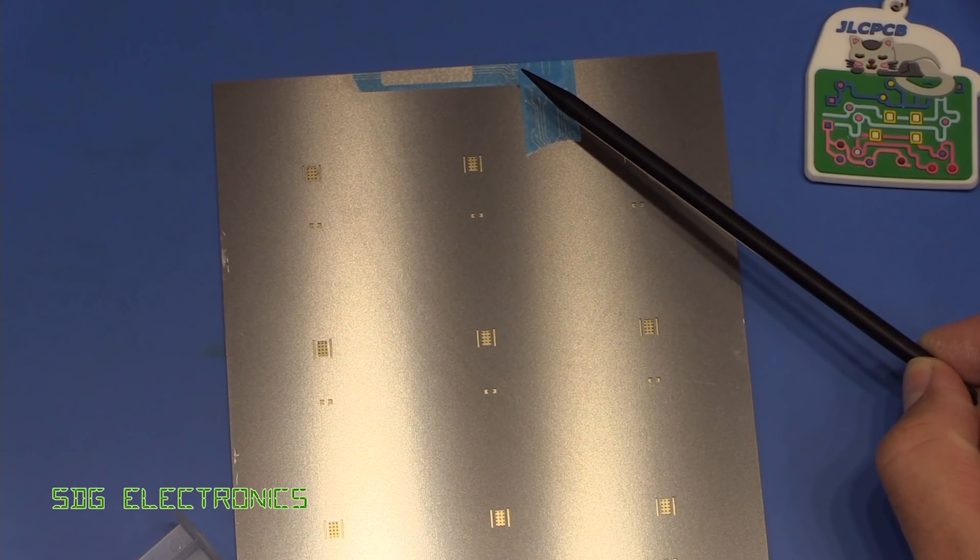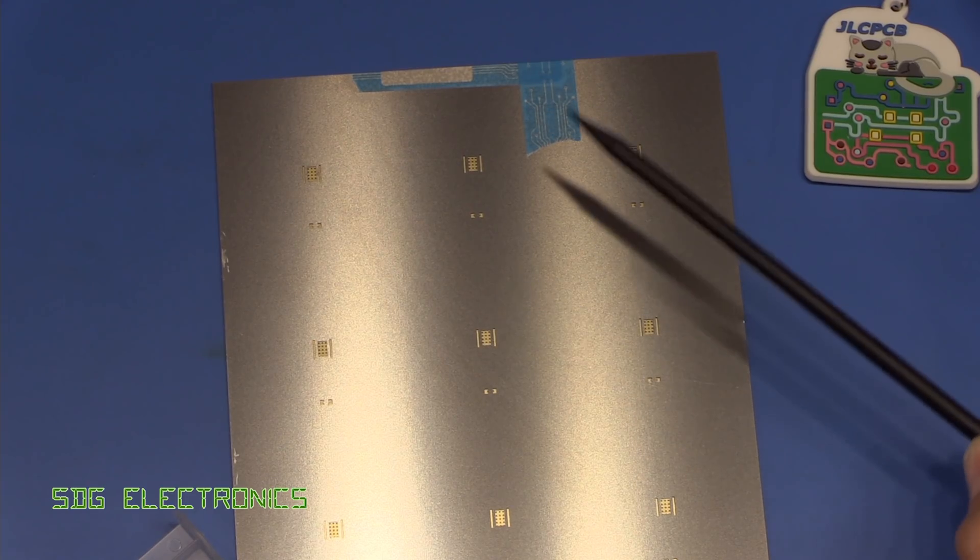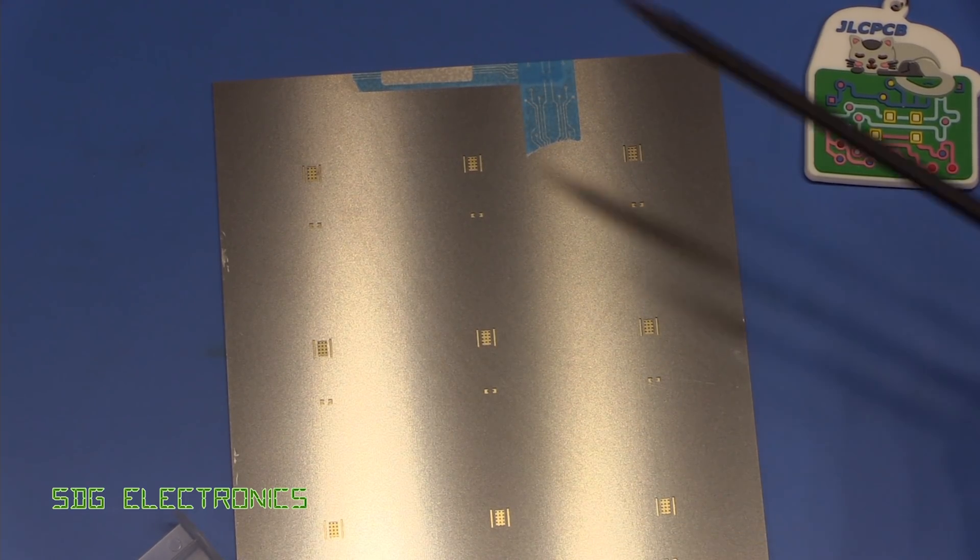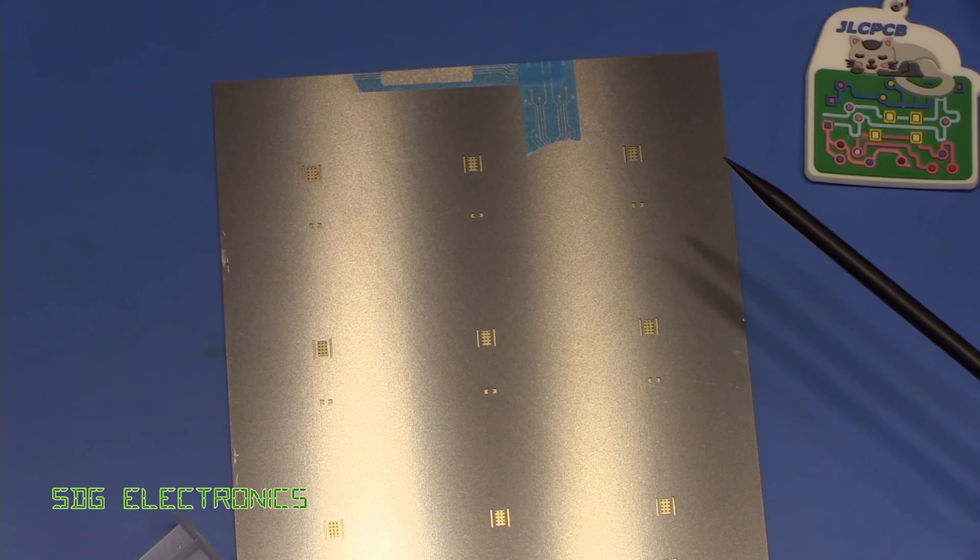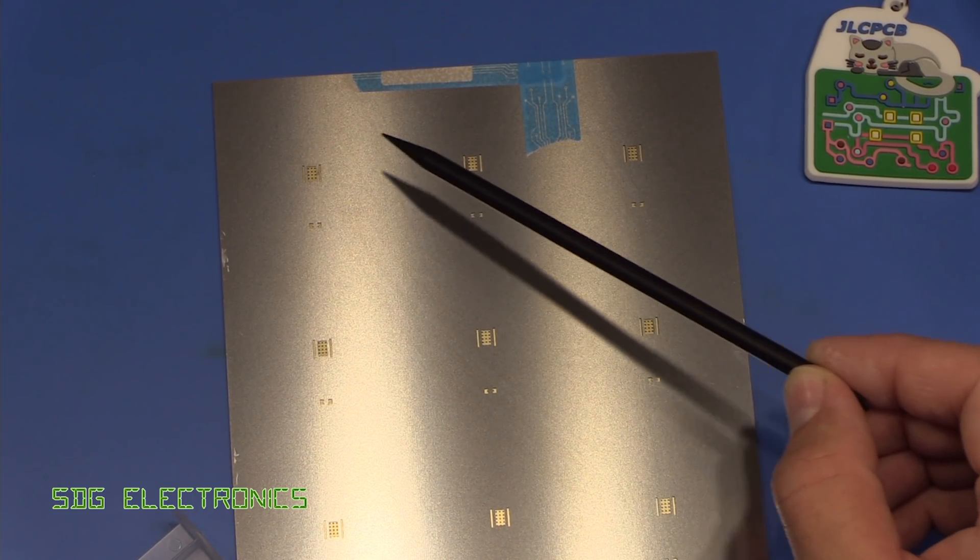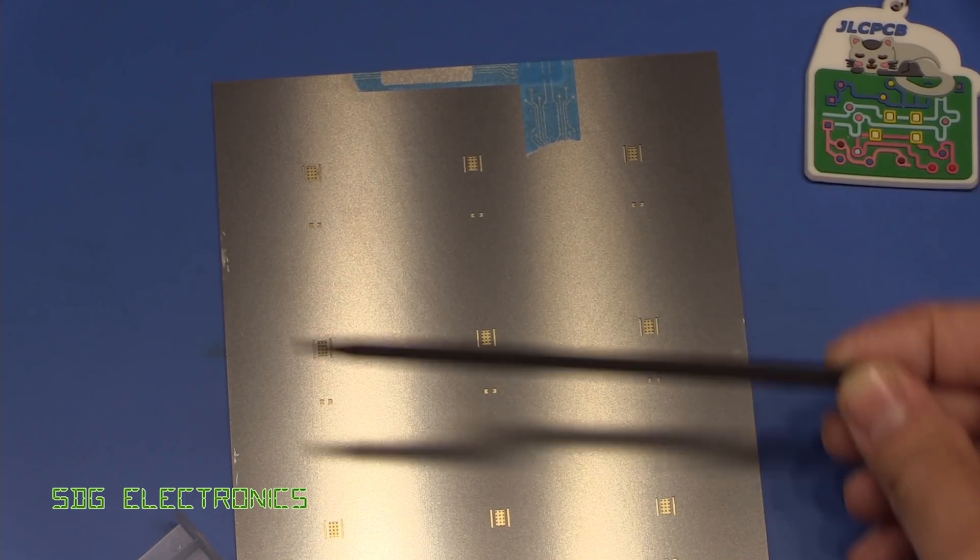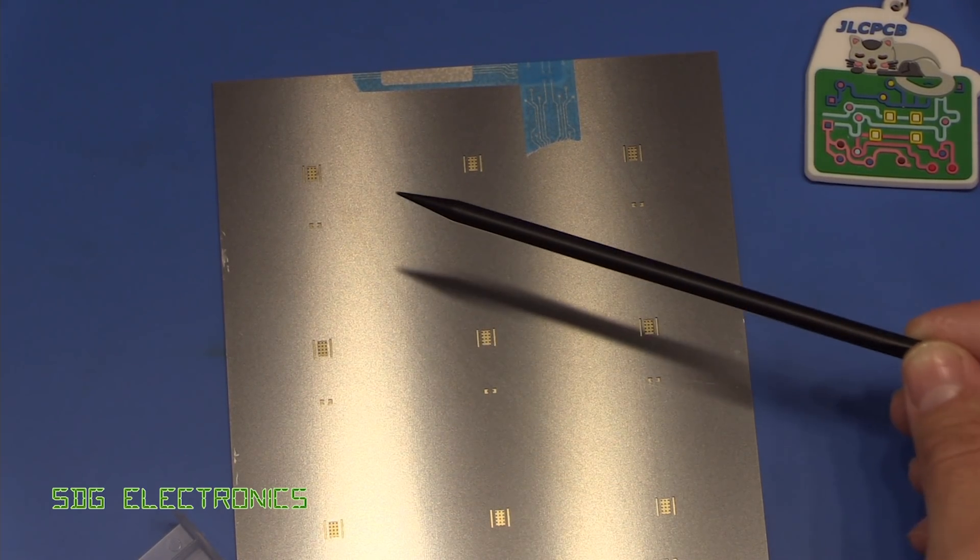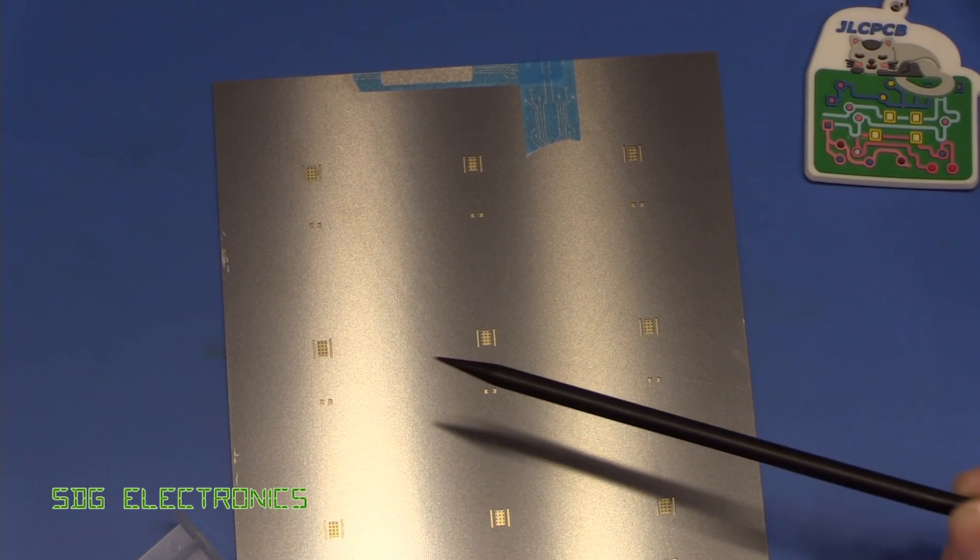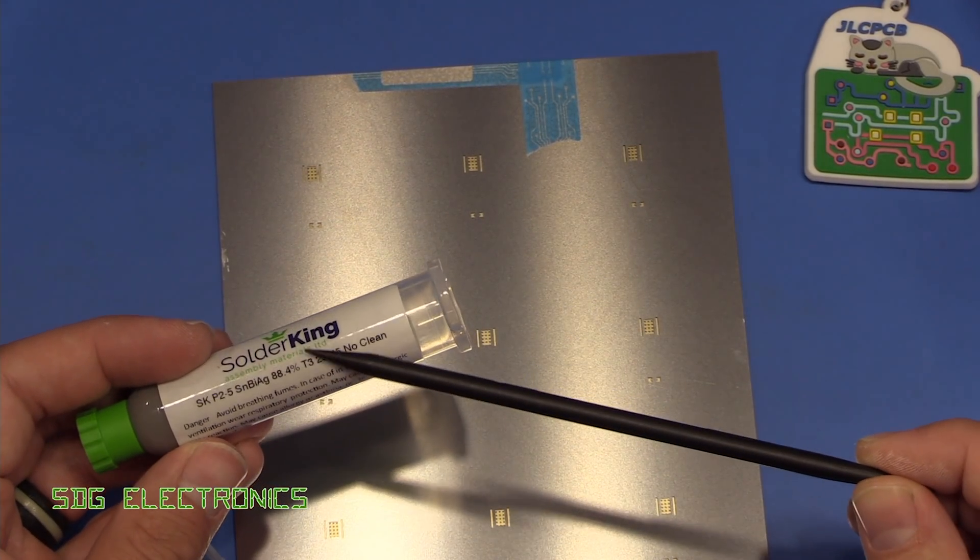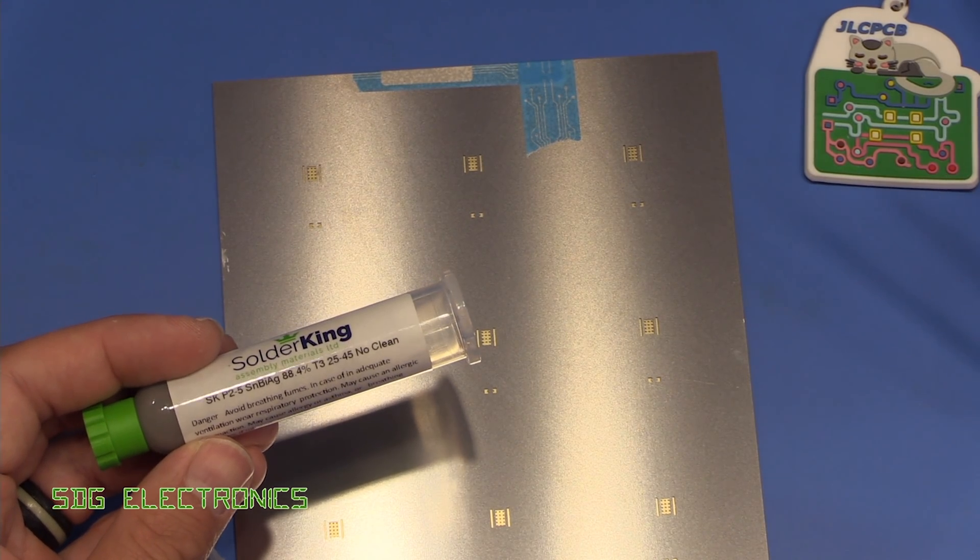So I've taped the PCB to the stencil after aligning it only at the top so that we can fold up the stencil once we've applied the paste. And that'll mean that we get a nice clean finish. And rather than apply a bead of solder paste all the way along the top and try and do it in one go, I'm probably going to work these LEDs individually because they're quite spaced out. And once you've put the paste on here, there's not really any easy way to get it back into a syringe.